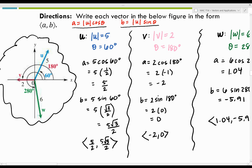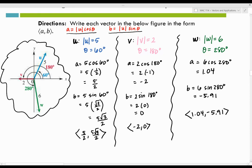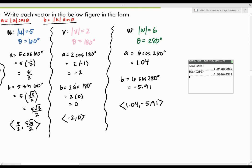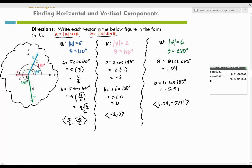For vector W, from the picture the magnitude is 6 and the direction angle is 280 degrees. Since 280 degrees is not a standard unit circle angle, I plugged it into the calculator: 6 cosine 280 for the horizontal component and 6 sine 280 for the vertical component — make sure you're in degrees. If your direction angle is a unit circle angle, leave the answer in exact form. If not, use your calculator and round to the correct decimal place.